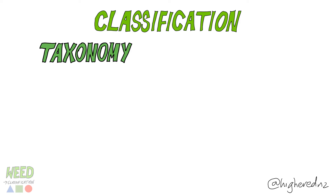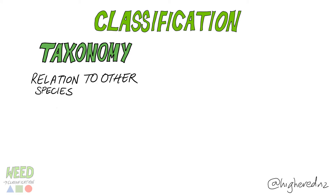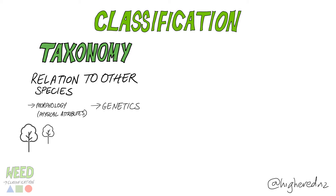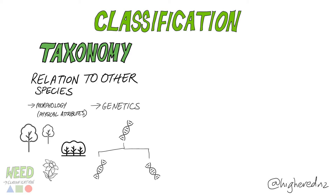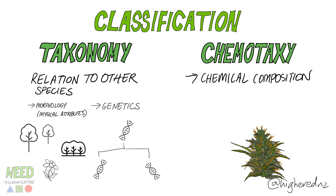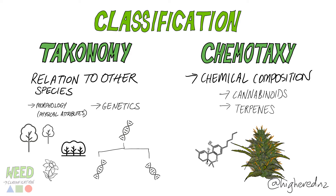So what is taxonomy? Taxonomy is the naming and classification of all life based on the relationship to other species. This is based on morphology — the physical attributes — and genetics. We also look at chemotaxonomy and the chemical composition of different cannabis based on cannabinoid and terpene content.